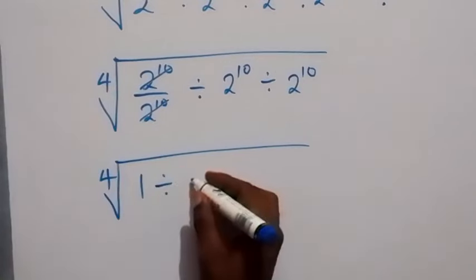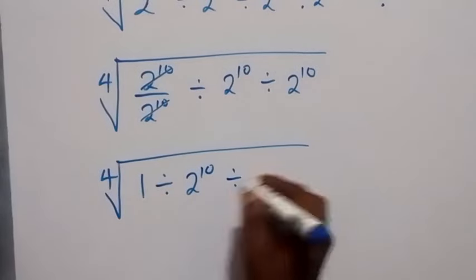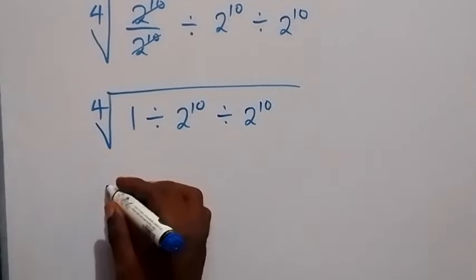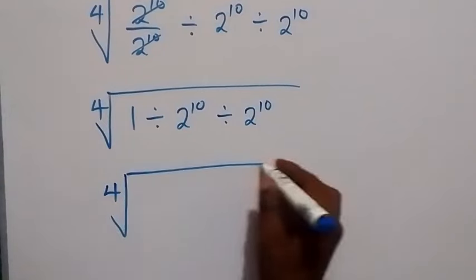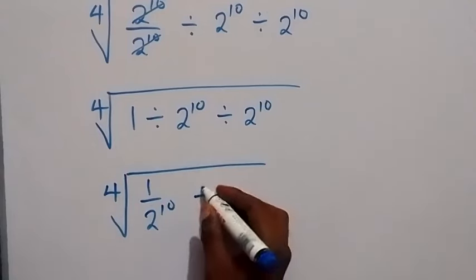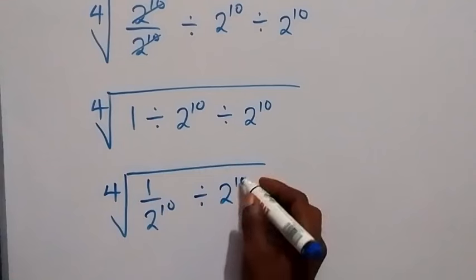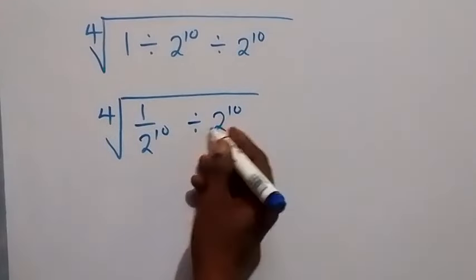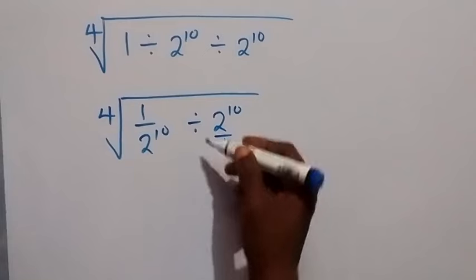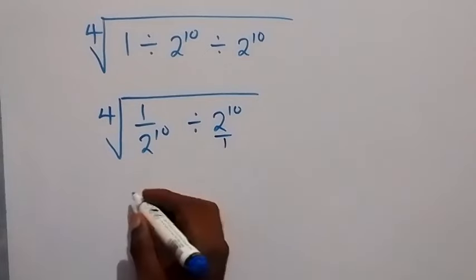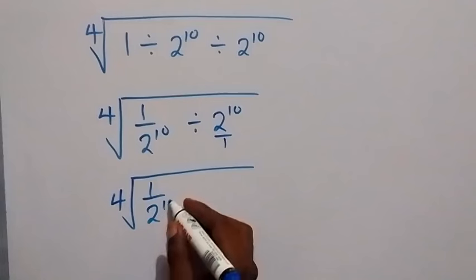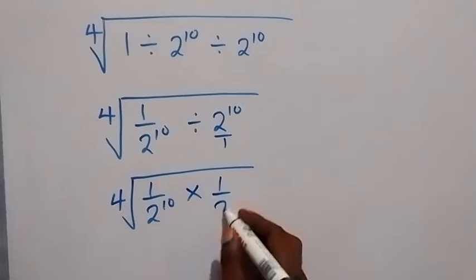...divided by 2 raised to power 10 divided by 2 raised to power 10. From here we can also write this as the fourth root of 1 over 2 raised to power 10 — those two together — then divided by 2 raised to power 10. Let's turn this division into multiplication: 2 raised to power 10 over 1 flips, so we have fourth root of 1 over 2 raised to power 10, multiplied by 1 over 2 raised to power 10.